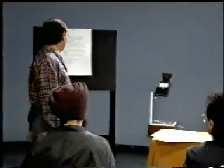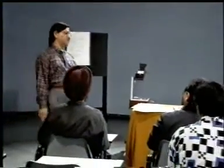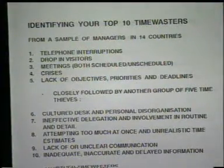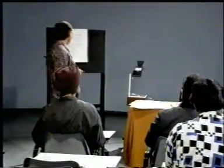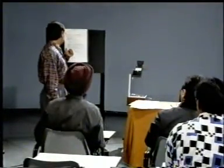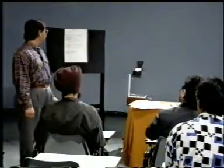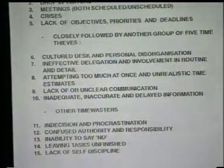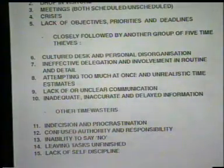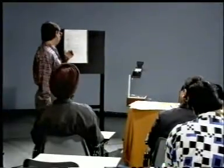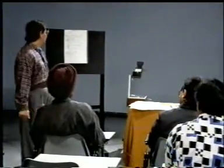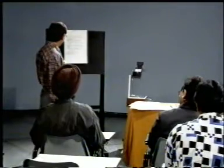Ninth is lack of or unclear communication - if communication is not good, we cannot pass on good instructions to subordinates, leading to disorganization and other problems. Tenth is inadequate, inaccurate, and delayed information - because we do not get the right type, right quantity, right quality, or timely information, that leads to inaccuracy or delay in decision making, and time gets wasted.